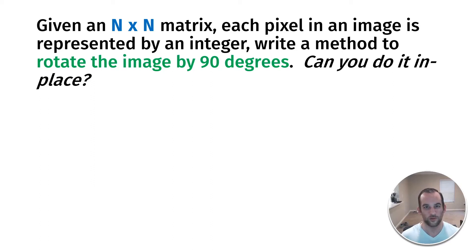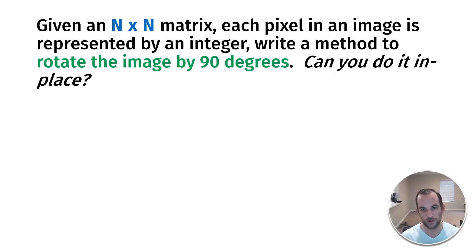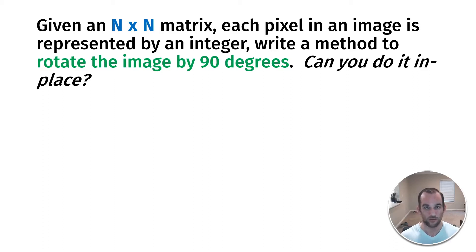Welcome back to another coding interview question. Today's question: given an N by N matrix where each pixel in an image is represented by an integer, write a method to rotate the image by 90 degrees. Can we do it in place?